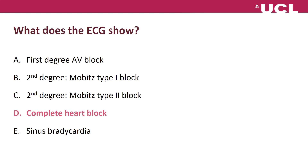The answer is D, complete heart block. There is no relationship between the P waves and the QRS complexes, which explains the profound symptoms: dizziness, near-syncope, and the marked bradycardia at 28 bpm.